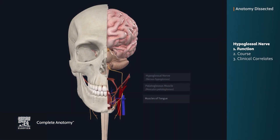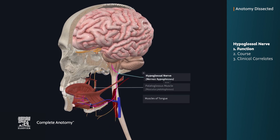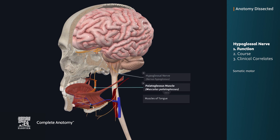The hypoglossal nerve, or the twelfth cranial nerve, like the accessory nerve, is purely a motor cranial nerve that provides somatic motor innervation to almost all the muscles in the tongue, except the palatoglossus muscle.